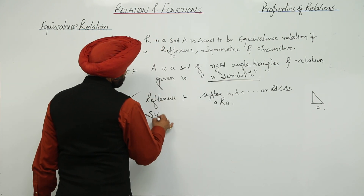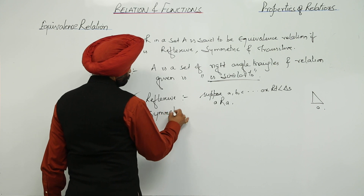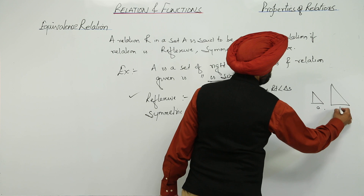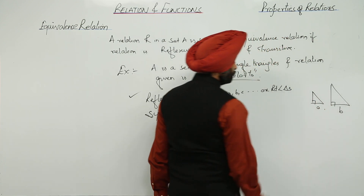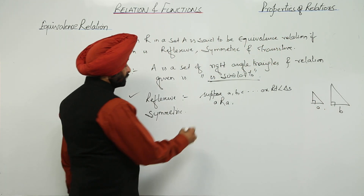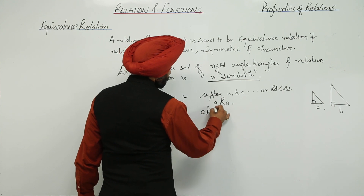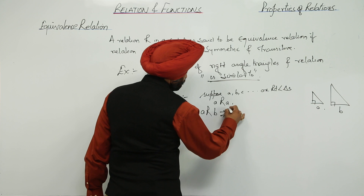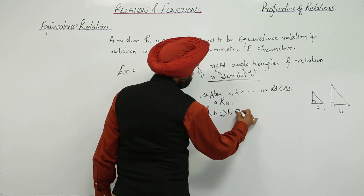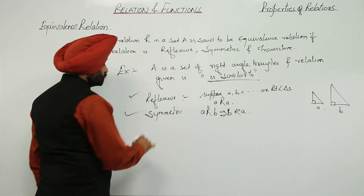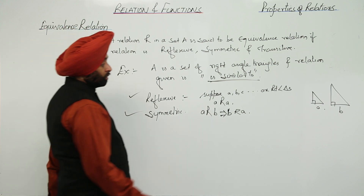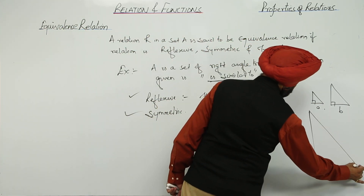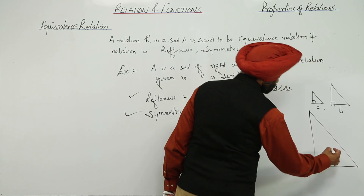Symmetric. Now we are having one more triangle — suppose this is B. Is it clear? Now A is similar to B, and this implies B is similar to A. Therefore this is also true — symmetric.